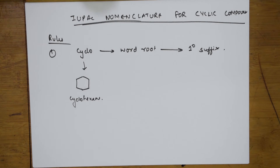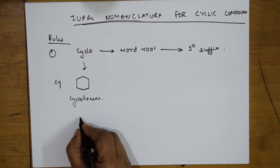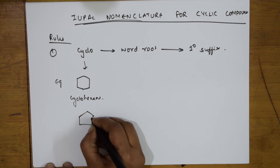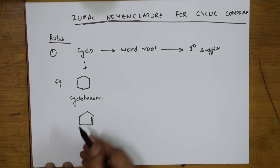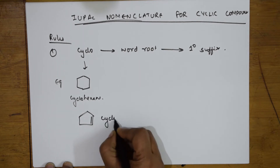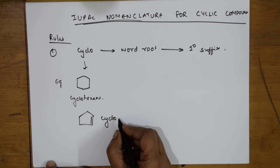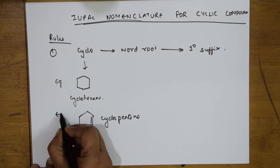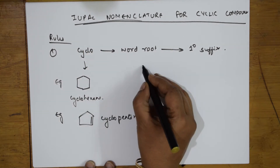One more example: suppose I take this compound. It is also a cyclo group, but here there is a double bond. 1, 2, 3, 4, 5 — this is cyclo, pent, 5 carbons, with a double bond. So you are going to write it as cyclopentene. I am talking about the cyclo groups here.